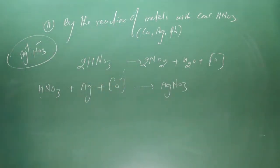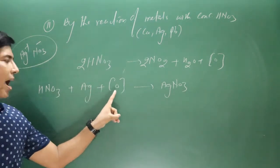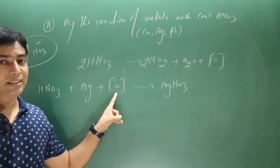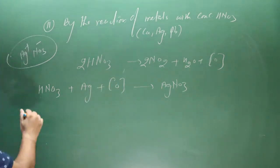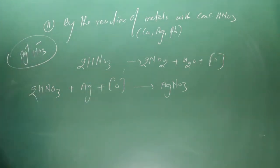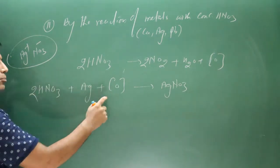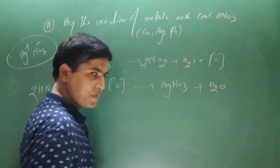We take two molecules of nitric acid to get two hydrogen atoms, which combine with nascent oxygen to get the water molecule. Balancing the nitrate ion (multiplied by two) and silver atoms gives a balanced equation.